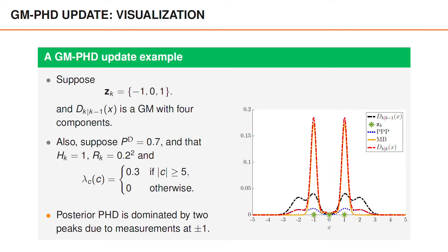which gives us the dash dotted red curve in the figure. As you can see, the posterior phd is dominated by two peaks around minus 1 and 1, which are due to the corresponding measurements.